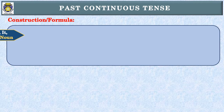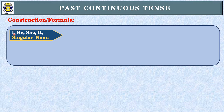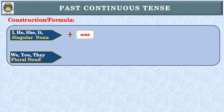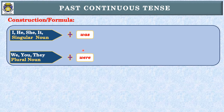Dear students, if a sentence starts with I, he, she, or it — I is first person pronoun; he, she, it are third person singular pronouns — or a singular noun, we'll use 'was'. Was is a helping verb. If a sentence starts with we, you, or they — we is first person pronoun, you second person, they third person plural — or a plural noun, we'll use 'were'. He, she, it are third person singular, and they is third person plural. Was and were are both helping verbs.